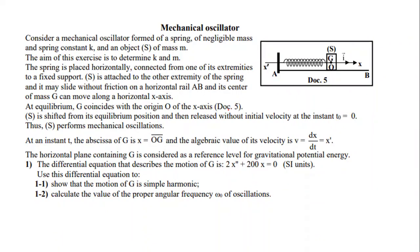Session 2019, exercise number two. Consider a mechanical oscillator from a spring of negligible mass, where the spring constant is K and the object S has mass M. The aim of this exercise is to determine K and M. The spring is placed horizontally, connected from one extremity to a support, and S is attached to the other extremity of the spring and may slide without friction on a horizontal surface.